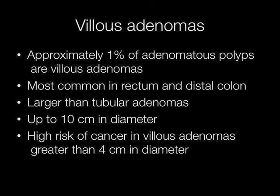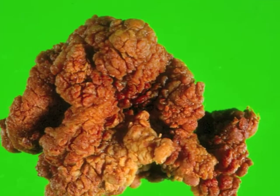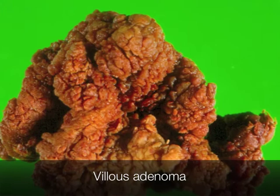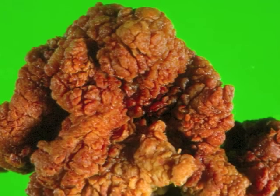Approximately 1% of adenomatous polyps are villous adenomas. They are most common in the rectum and distal colon. They are larger than tubular adenomas, up to 10cm in diameter, and there is a high risk of cancer in villous adenomas greater than 4cm in diameter. Here you can see what a typical villous adenoma looks like.